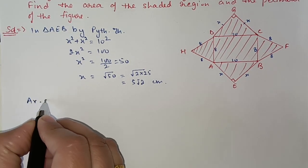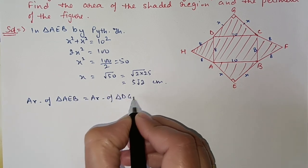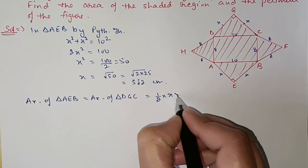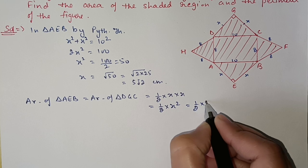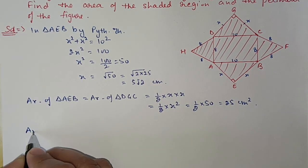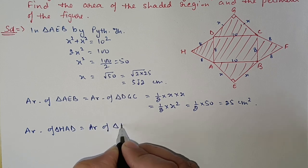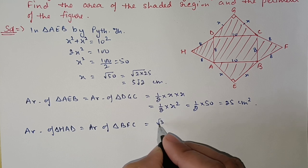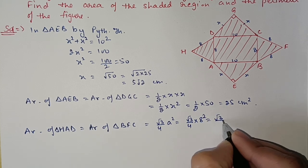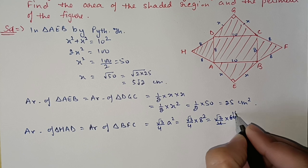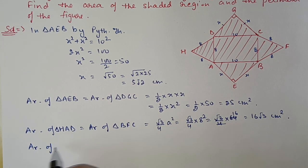Area of triangle AEB = area of triangle DGC = ½ × x × x = ½ × x² = ½ × 50 = 25 centimeter square. Area of triangle HAD = area of triangle BFC (equilateral triangle) = (√3/4) × a² = (√3/4) × 8² = (√3/4) × 64 = 16√3 centimeter square.